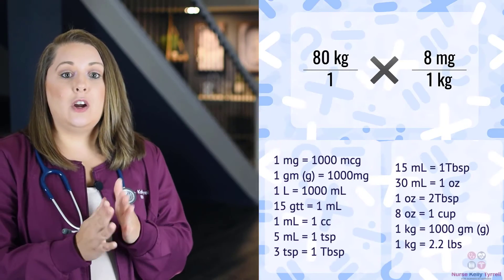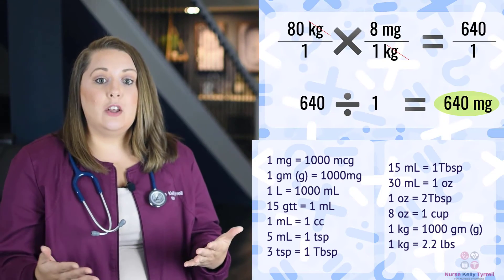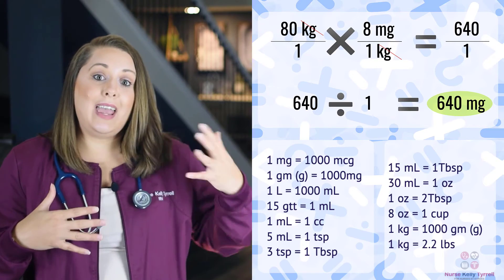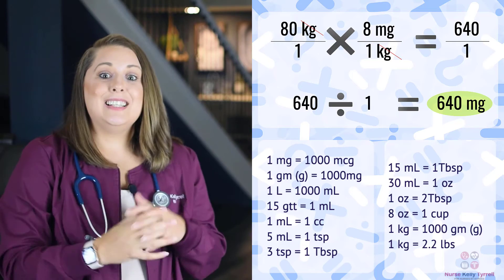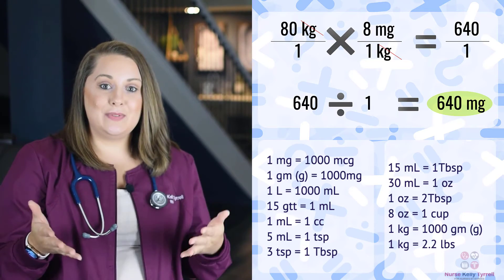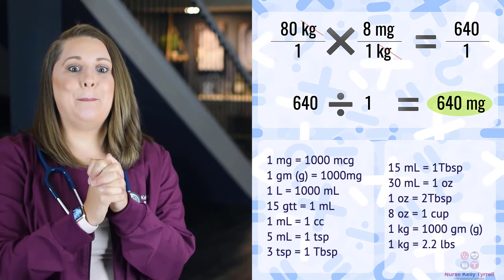Now let's figure out the second part using dimensional analysis. We need to administer 8 milligrams per kilogram to our patient who weighs 80 kilograms. Using the formula weight times ordered dose, we set up: 80 kilograms over 1, times 8 milligrams over 1 kilogram. The kilograms cancel out. So 80 times 8 equals 640, and 1 times 1 equals 1. Dividing 640 by 1 gives us our final answer of 640 milligrams.